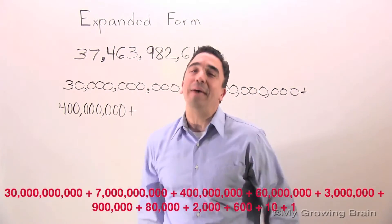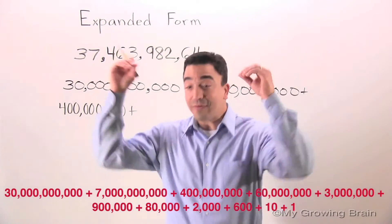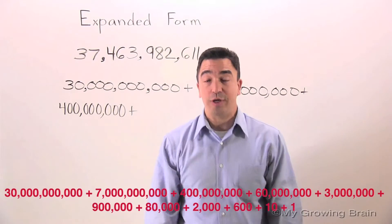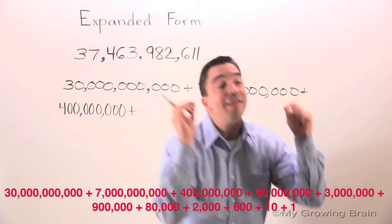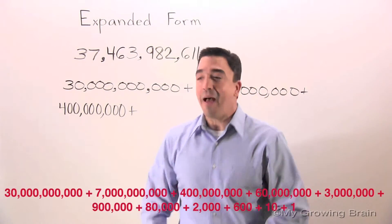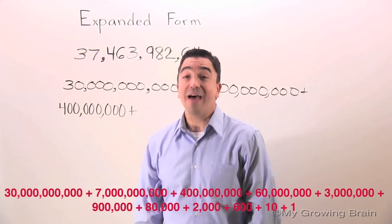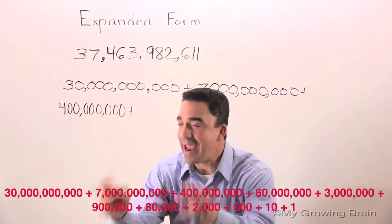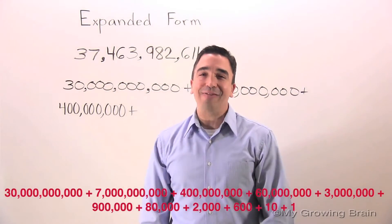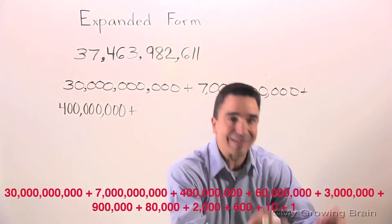30 billion plus 7 billion plus 400 million plus 60 million plus 3 million plus 900,000 plus 80,000 plus 2,000 plus 600 plus 10 plus 1.